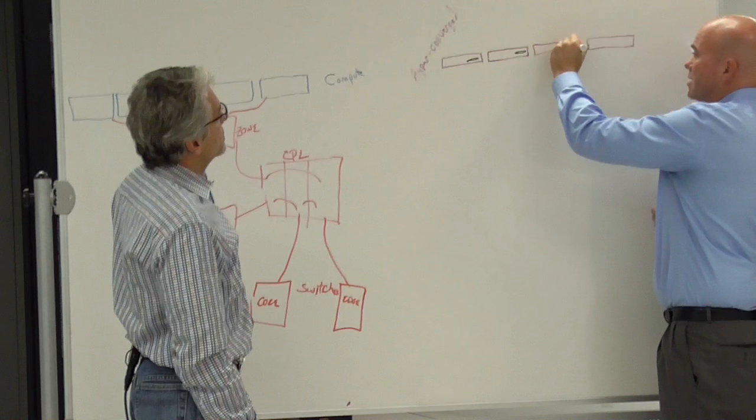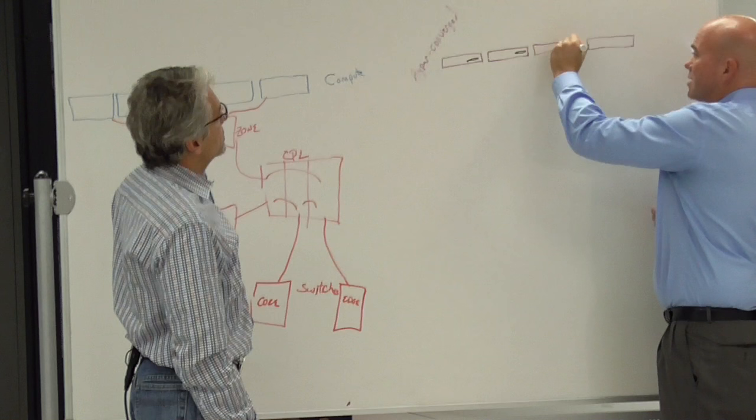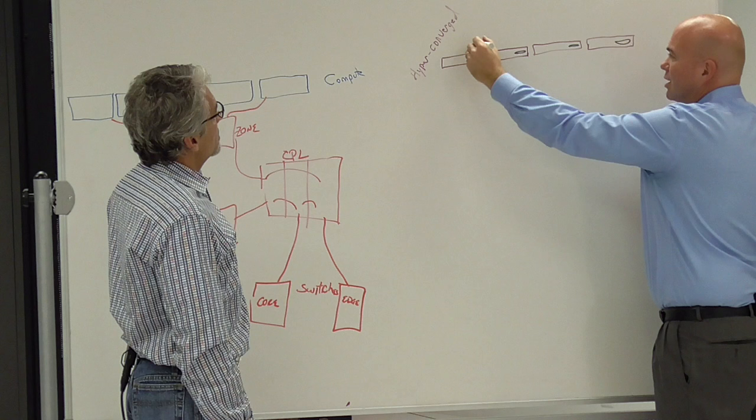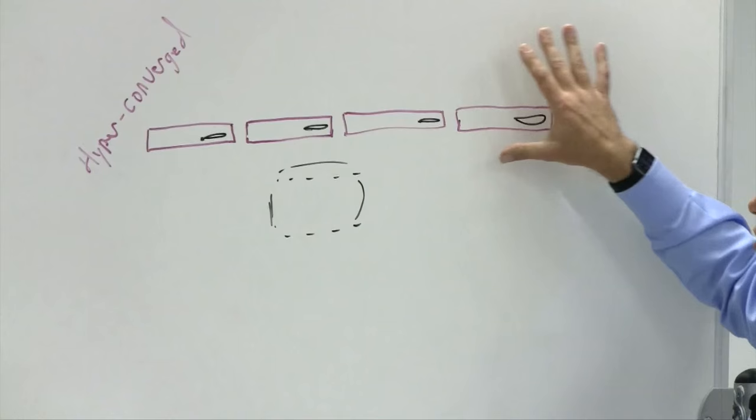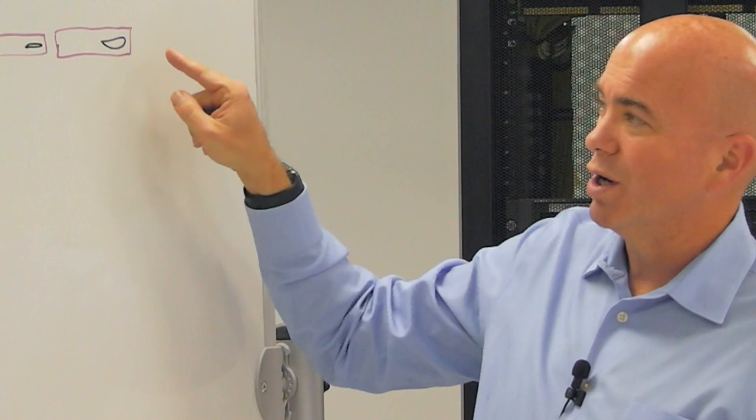So in the hyper-converged architecture, what we've done is we've got storage in these boxes. Most of the time, nowadays, it's flash. And then that storage is aggregated into a virtual volume that is then shared between all those. Well, obviously, we've got our normal high-performance server networking concerns we've got to be careful with. And now I've got data, bits of data, being spread across multiple disks within these things.